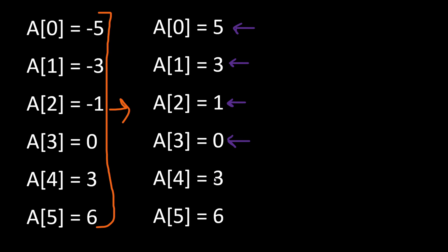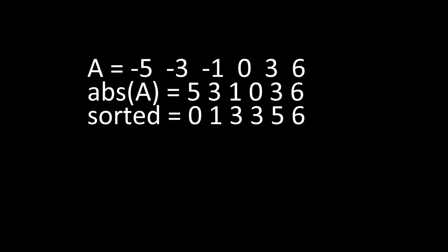Our last and final element is number 6 which is the fifth element for this example. So in total we have five distinct elements, and this will be what we return as a final result.